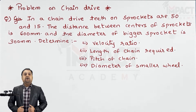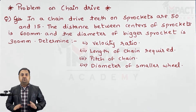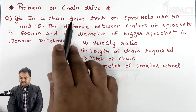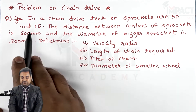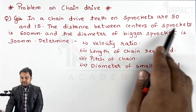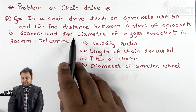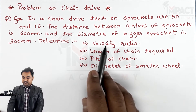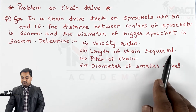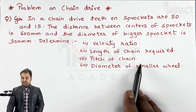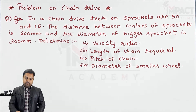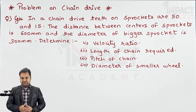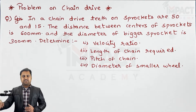Hi friends, in this video we are going to see a problem on chain drive. The question states that in a chain drive, teeth on sprockets are 50 and 15, the distance between centers of sprockets is 600 mm, and the diameter of the bigger sprocket is 300 mm. We have to determine: velocity ratio, length of chain required, pitch of chain, and the diameter of the smaller wheel.